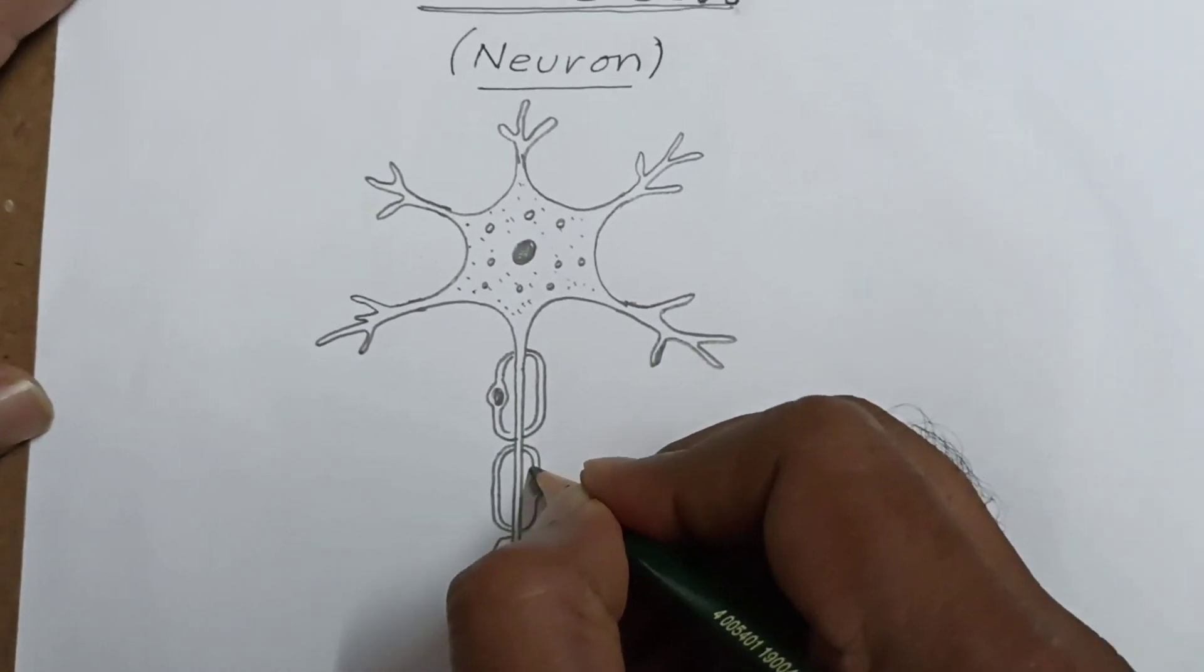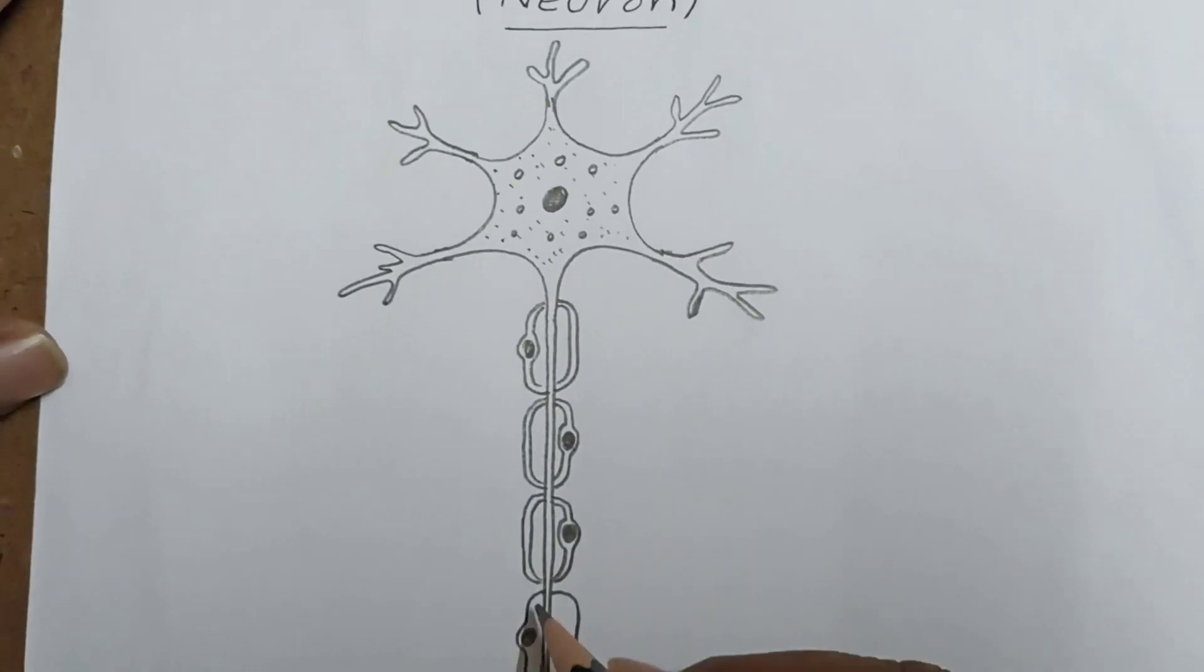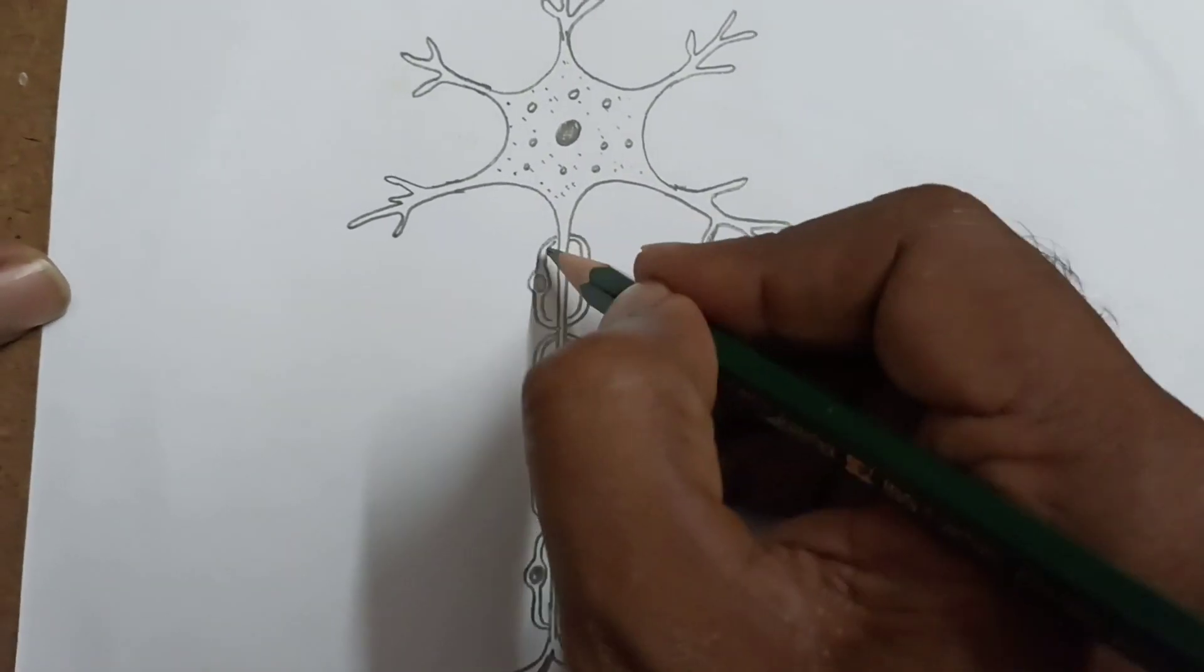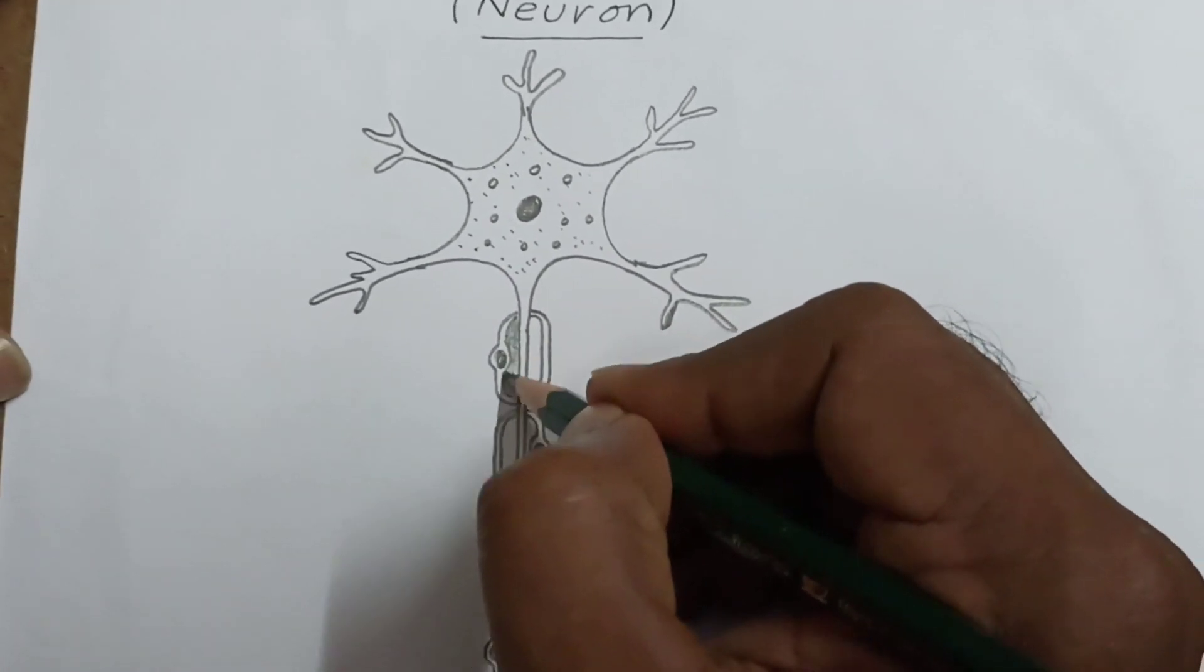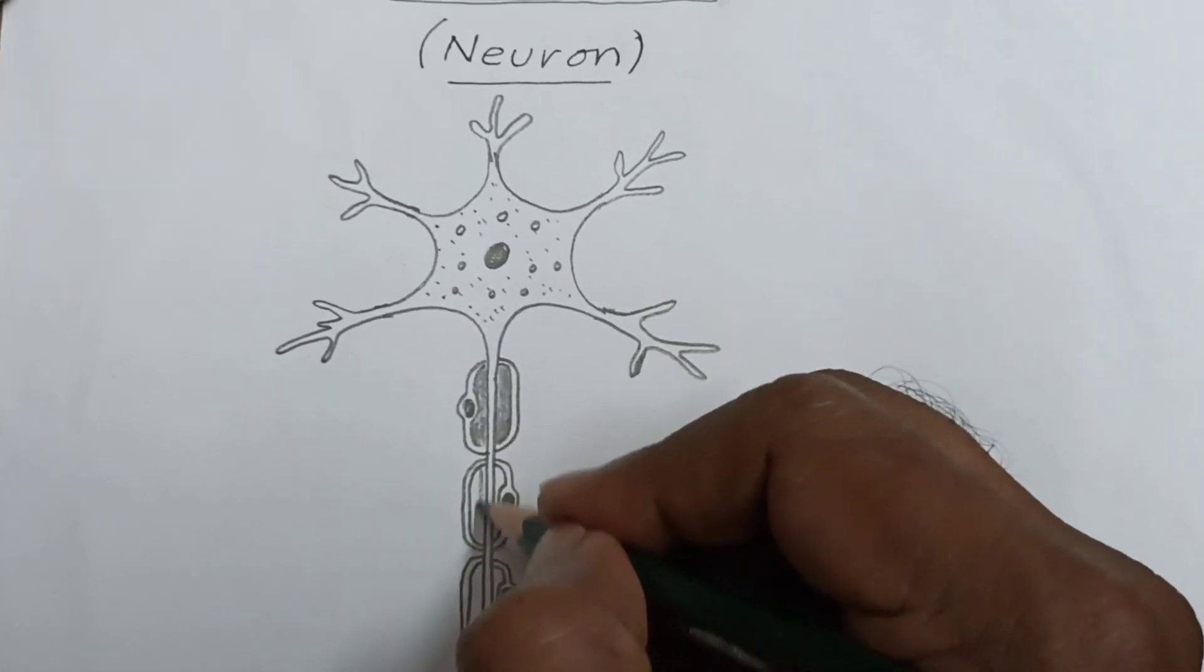The gaps between these myelin sheaths are known as nodes of Ranvier. You draw like this now.